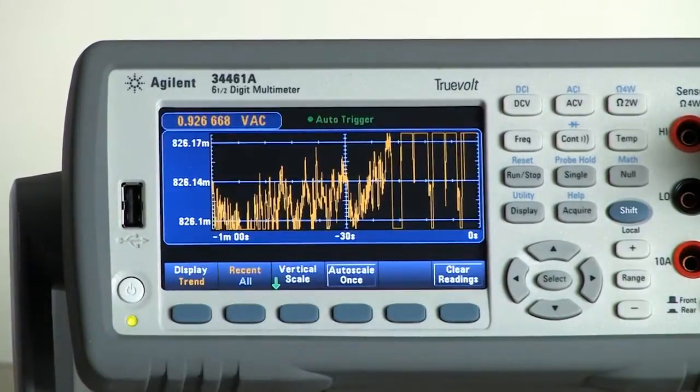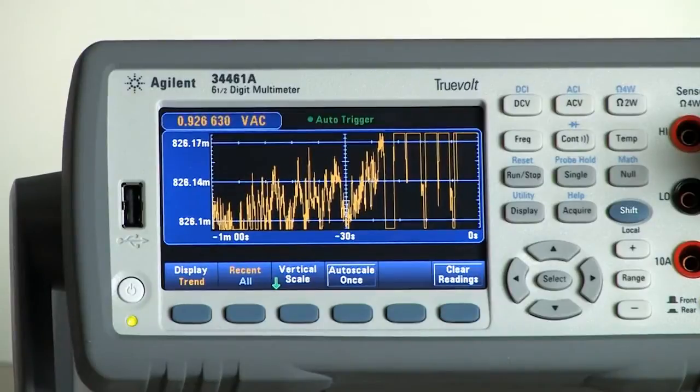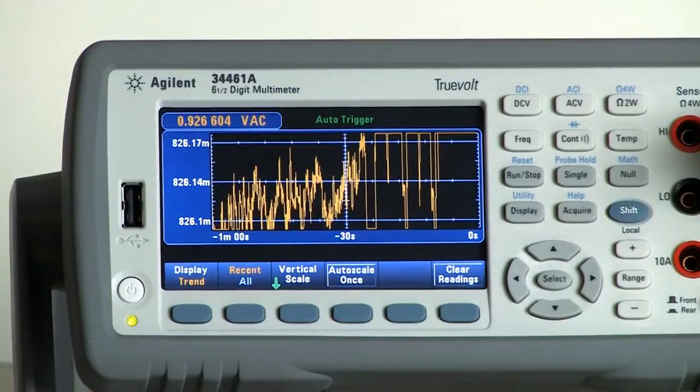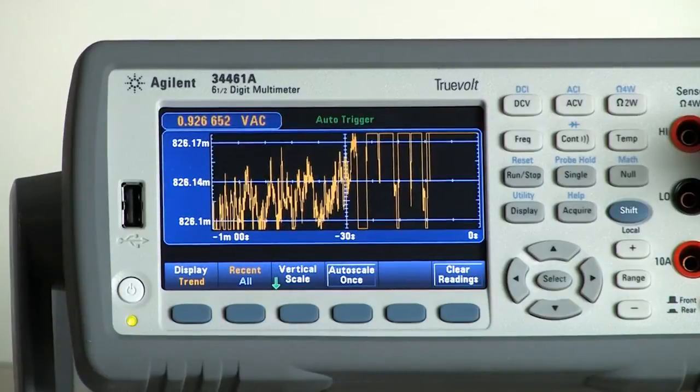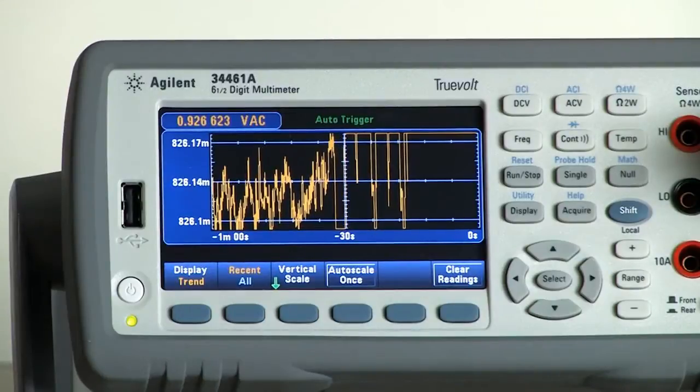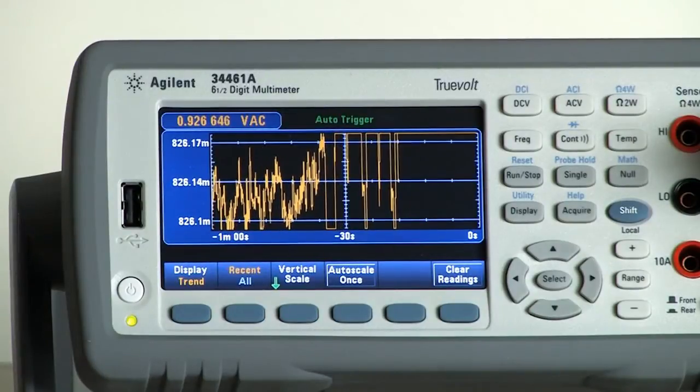The third choice available is a trend chart. So maybe you're wanting to see what's happening with your measurements over time as you're inputting different stimulus into your circuit. And so we've made a trend chart available on the 34461 that enables you to do that.